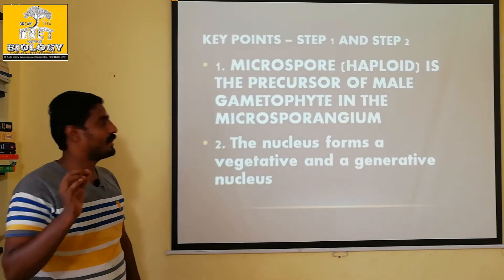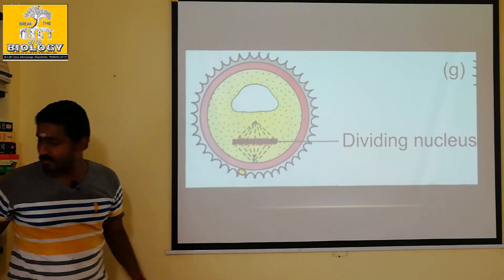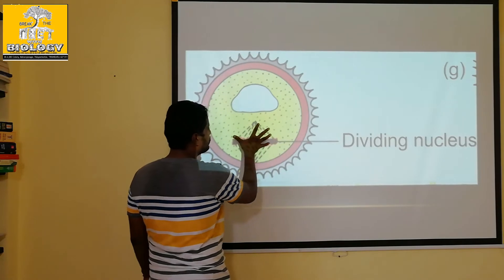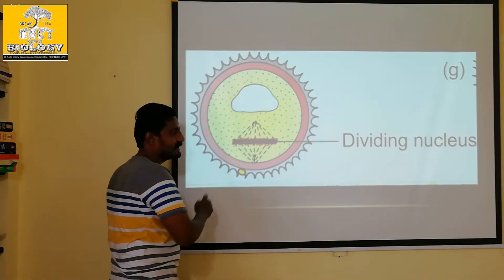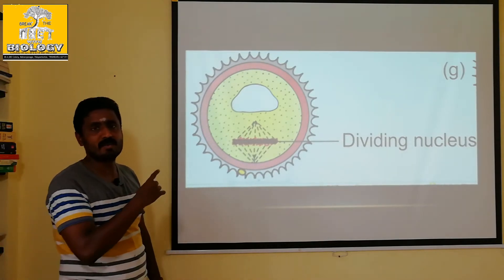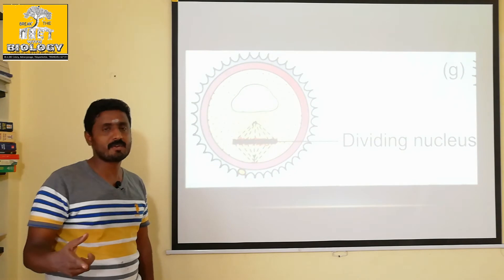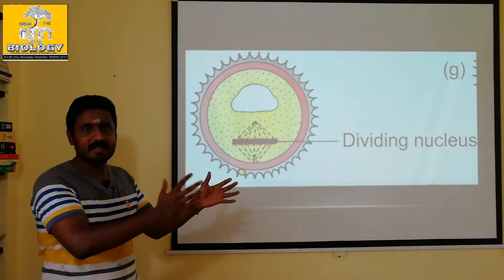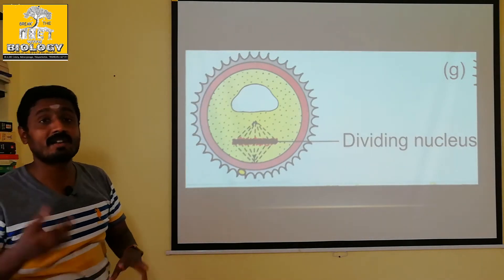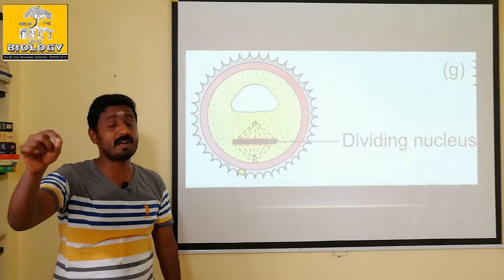Step 2: The nucleus forms a vegetative and a generative nucleus. Now let's look at the nucleus. The nucleus undergoes division — it is in a metaphase stage. That nucleus undergoes mitosis division. The haploid microspore undergoes mitosis, since haploid to haploid is a mitosis division. So it is a haploid microspore undergoing mitosis.